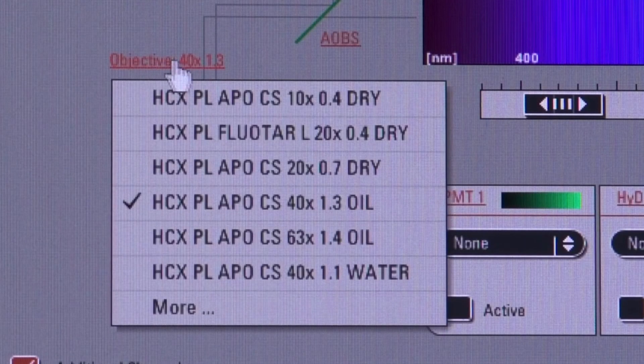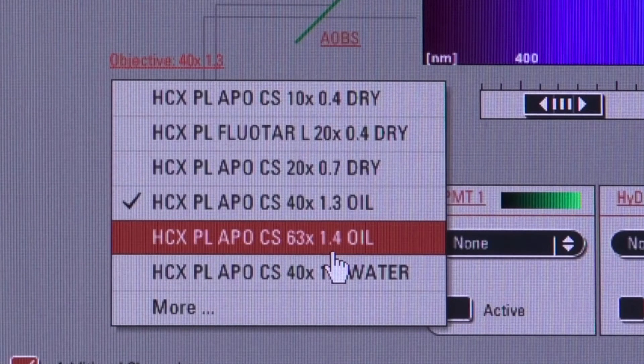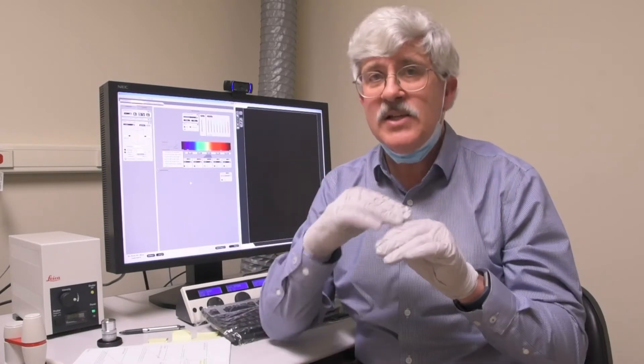As I have already mentioned though, we want to use the 63X objective. This has an NA of 1.4, so it has the highest resolution of all our objectives. Being a 1.4 NA lens, it is also an oil immersion lens. I am often asked why we don't have a 100X oil objective for this microscope, and the fact is we do. It is just not as good as our 63. The 63X and the 100X both have a numerical aperture of 1.4, so they both have the same resolving power and they can both see the same level of detail. The 63, however, gives us some advantages with confocal. With confocal, you are actually getting to your total magnification with zooming, and so you can start with a lower 63X and see a bigger field of view this way, more cells in there, and then zoom in to your final size.